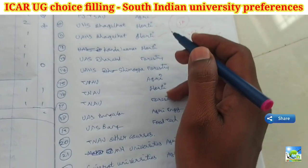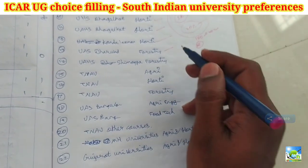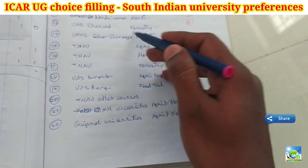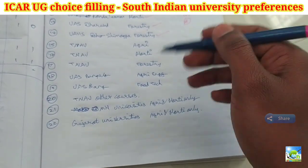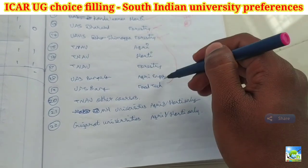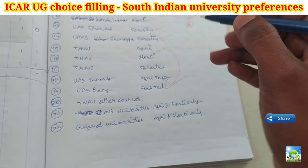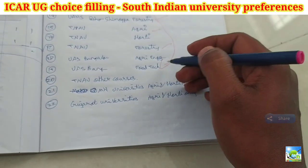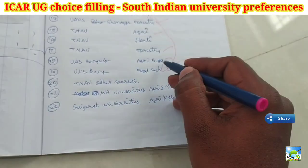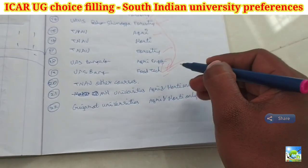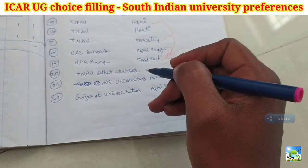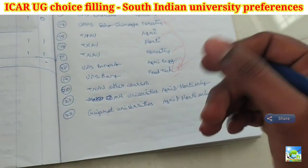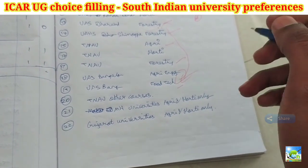Keeping those two factors in mind — fellowship and the 40% state reservation — continuing the preference order: UHS Bagalkot Horticulture, UHS Bagalkot Horticulture, Konda Laxma Narasimha Rao Horticulture, UAS Dharwad Forestry, UAS Shimoga Forestry. UAS Dharwad Forestry is a sub-campus only. Then TNAU Agriculture, TNAU Horticulture, TNAU Forestry. If you want a fellowship, you can shift the order accordingly. UAS Bangalore Agricultural Engineering and UAS Bangalore Food Technology can also be added.